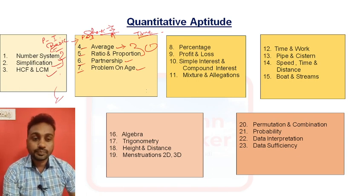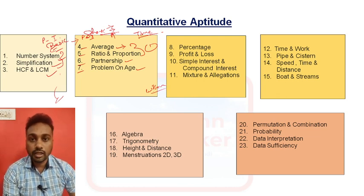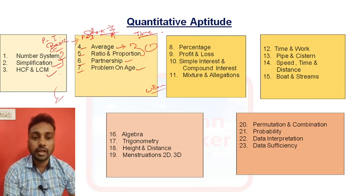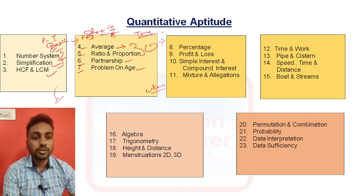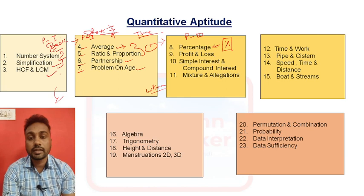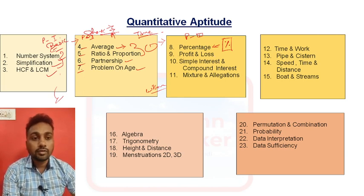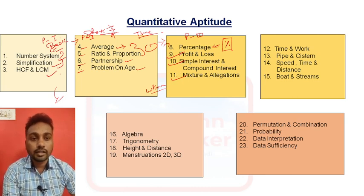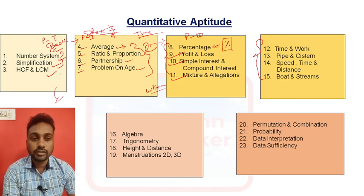I am going to cover all the syllabus without you having to remember any formula. I will teach you concepts, and through those concepts the entire aptitude chapter will be covered. For example, in section part three — the percentage section — if you know how to solve percentage and what types of questions are asked, you can easily solve profit and loss, simple interest, compound interest, and mixture and allegation, as all are related to each other.